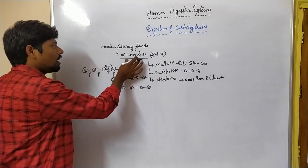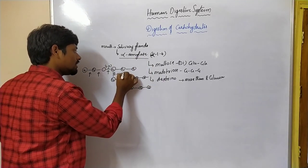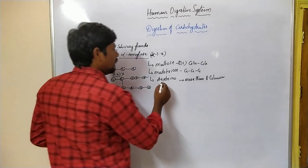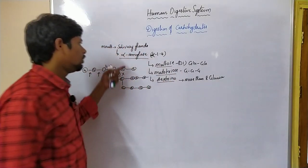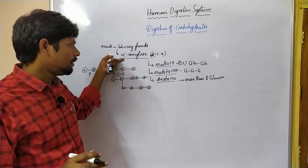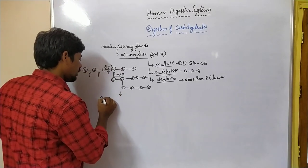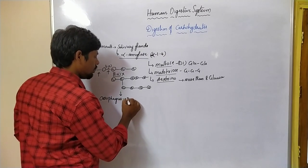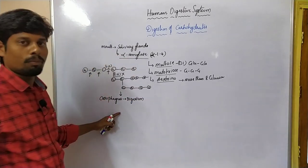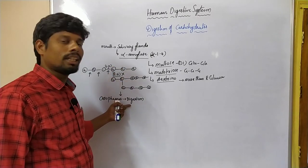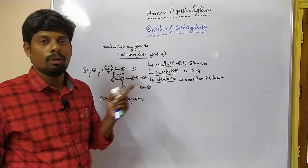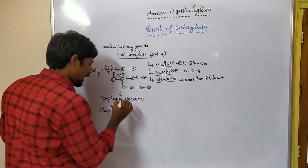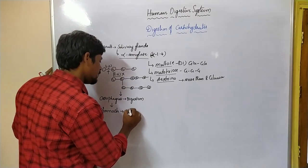In the mouth, the enzyme present is alpha amylase. After the mouth, the food enters the esophagus. In the esophagus there is no digestion of carbohydrates because the esophagus does not secrete any enzymes that act on carbohydrates. After the esophagus, the food enters the stomach. In the stomach also there is no digestion of carbohydrates.